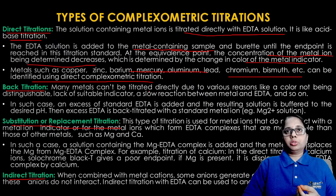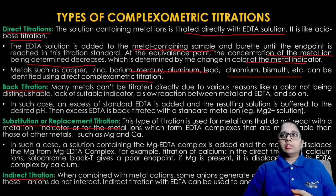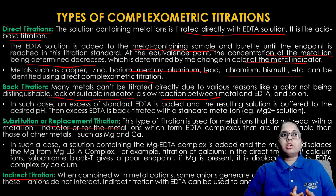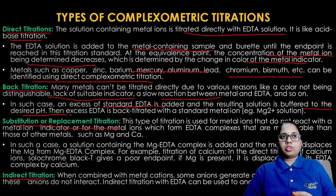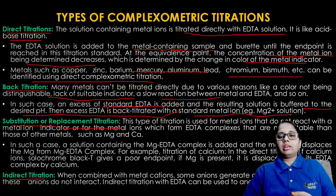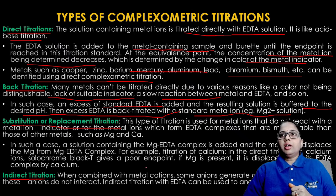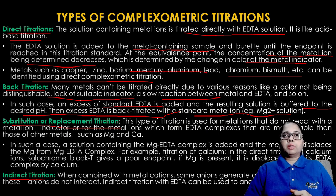(2) Back titration — used when metals cannot be titrated directly due to slow reaction, indistinguishable color, or lack of suitable indicator. An excess of standard EDTA is added, the solution is buffered to the desired pH, and then the excess EDTA is back titrated with a standard metal ion solution such as magnesium. The magnesium forms a complex with the excess EDTA.